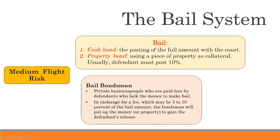For most people who don't have cash or property, the only solution to pay bail is by going to a bail bondsman. A bail bondsman is a private business person who is paid fees by the defendant to make the bail. In exchange for a fee — depending on the jurisdiction, 5% to 10% of the bail amount — the bondsman will put up the money for your release. You're going to have to pay that 5% or 10% regardless of the outcome of the trial, whether you're innocent or guilty.